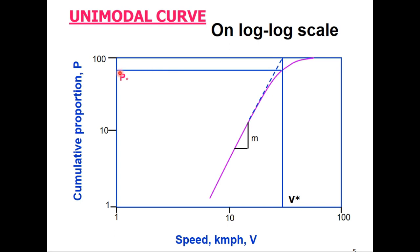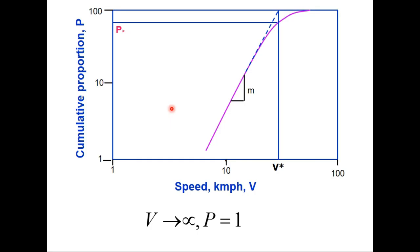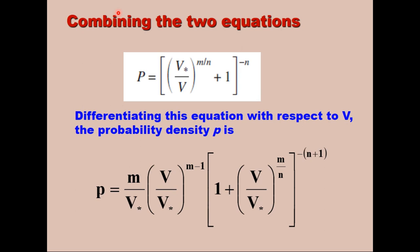Now for a very large speed, P becomes 1. That is when V is infinite, then P tends to be 1 or 100%. If you combine these two equations, you get the complete equation for the curve: P equals V star upon V power m upon n plus 1 raised to the power minus n. When you differentiate this equation with respect to speed, the probability density function small p will be given by this equation.